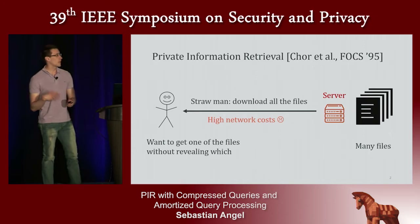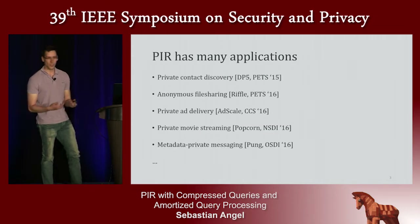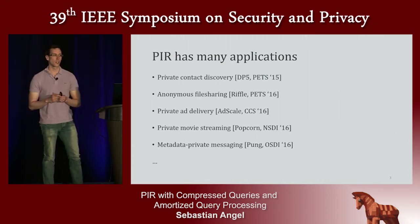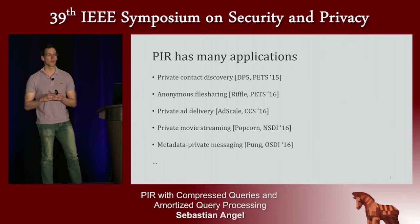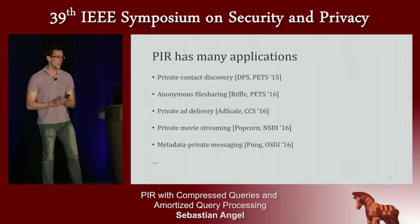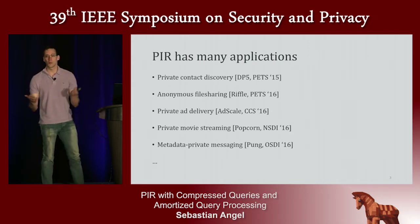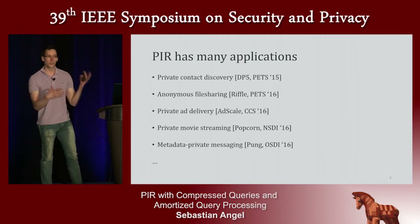The purpose of PIR protocols is to achieve this privacy guarantee at a much lower communication cost. PIR is very useful and has many applications. For example, if you want to figure out which of your friends are part of a social network without revealing who your friends are, you might use PIR. If you want to fetch ads without revealing which ad you fetch, or watch a movie on Netflix without revealing which movie you're watching, you might use PIR.